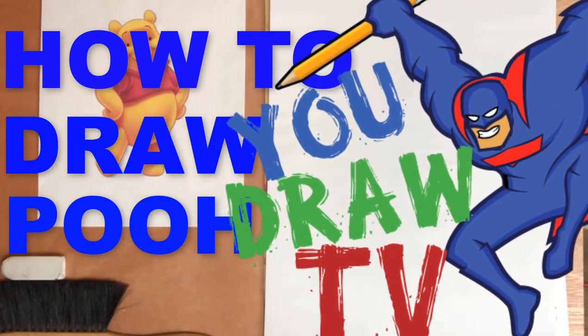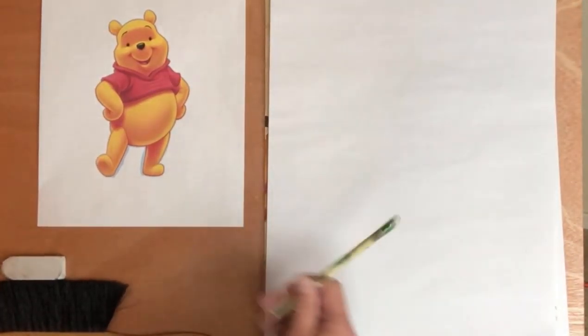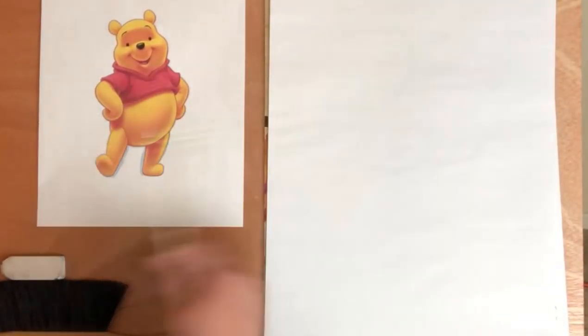Okay, we're gonna draw Pooh. Now when I look at him, there's a round head, big round tummy. Those are the main shapes.